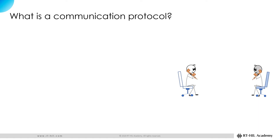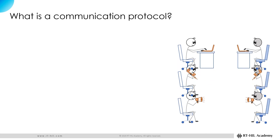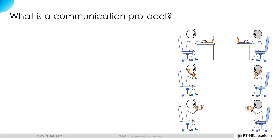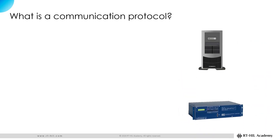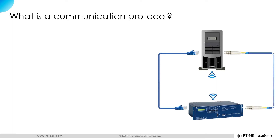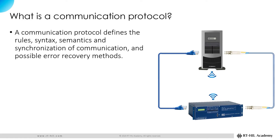In order for them to understand each other, they have to understand the same language. This requirement is independent of the physical media they use for communication, meaning that no matter what technology they use to communicate, they have to be able to comprehend the same language. That would be exactly the case when two devices are interfaced to communicate with each other. No matter what physical media is used, both devices should be configured to interpret a system of rules known to both of them for transmission of information. This system is called a communication protocol. A communication protocol defines the rules, syntax, semantics and synchronization of communication, and possible error recovery methods for transmission of information.